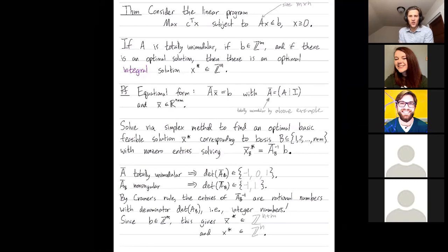So yeah, this is why people care about totally unimodularity. Total unimodularity. If your constraint matrix is totally unimodular, and so is your constraint vector, then finding a solution that's optimal means you can furthermore find a possibly different optimal solution with integer entries.